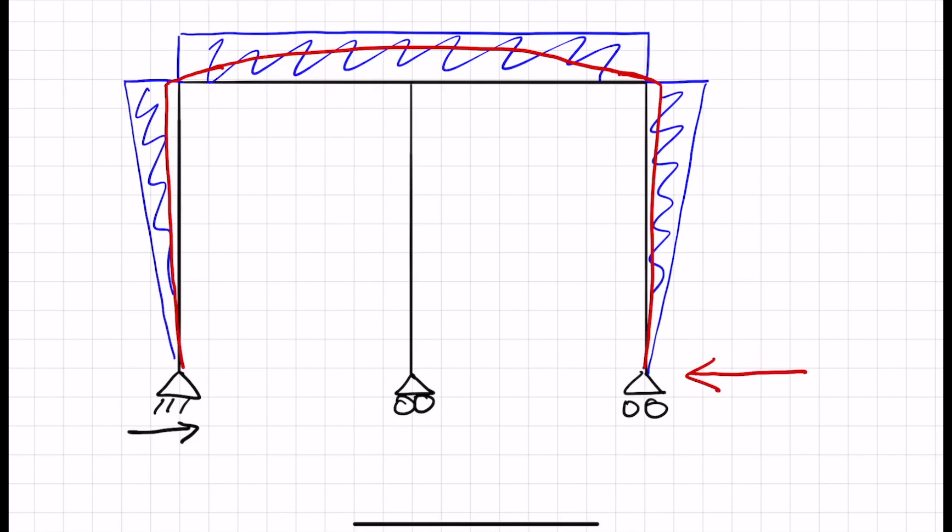But that cannot be the case, because the deflected shape must pass through that point there. So in fact, we will get a contraflexure.